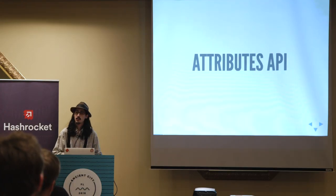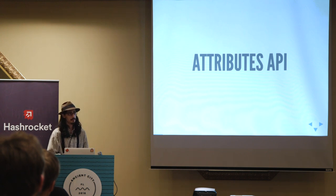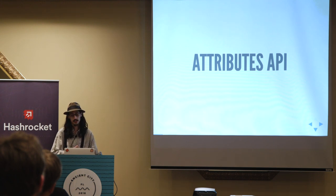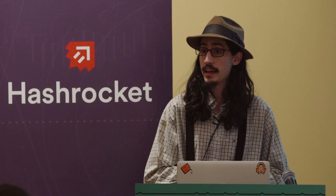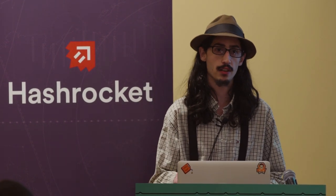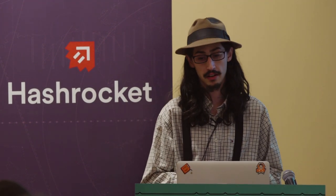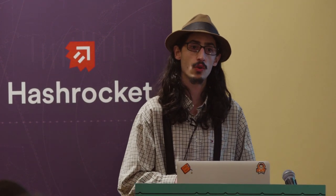The first one I want to talk about is called the typed attributes API. It's got a very special place in my heart because it is the feature that got me into Rails and that I've been working on for about two years. I gave a much more in-depth talk about it at Rails Conference 2015, but I've never really told the story of how that API came into existence.